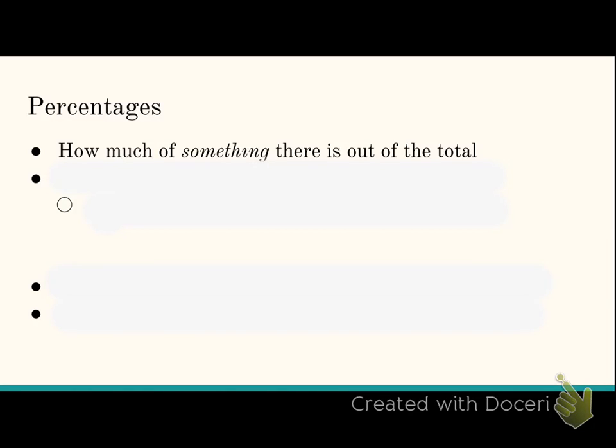So percentages. When we think about a percentage, what it is is how much of something there is out of the total. So we can talk about the percentage of students in the class that have an A - that's how many students have an A out of the total of the class. What your percentage is on a test - how many points you earned out of the total points that the test was worth. So we're going to apply that to some stuff with chemistry here.